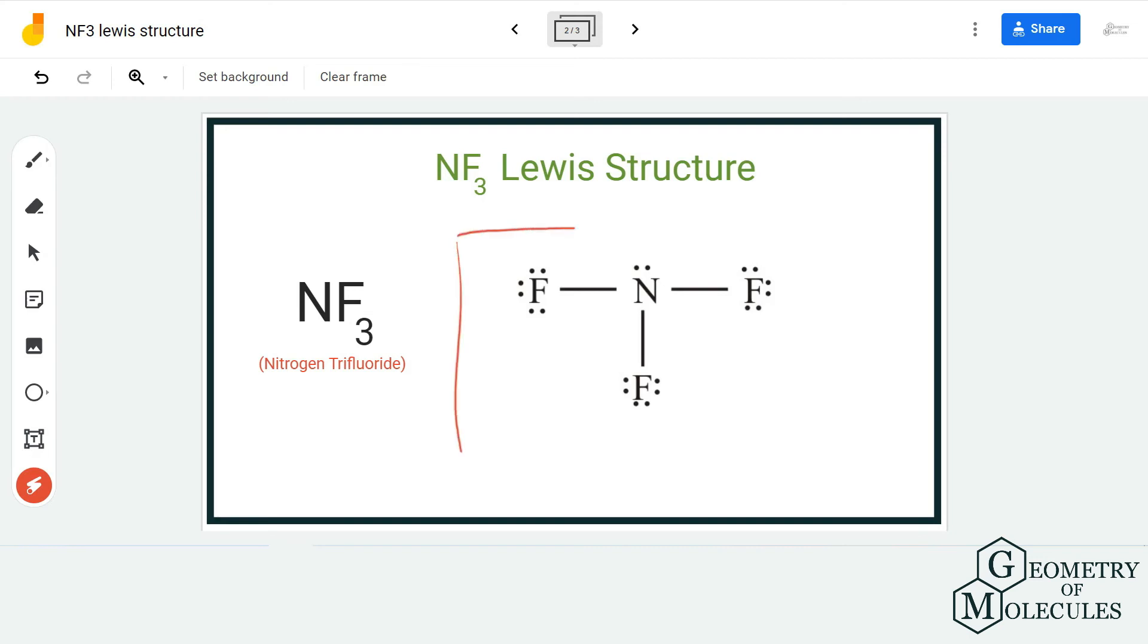This is the Lewis structure of NF3. However, you have to remember that the electrons on the nitrogen that are not participating in any bond formation are considered as non-bonding pairs of electrons or lone pairs of electrons. This is something you can remember for determining its molecular geometry and polarity.